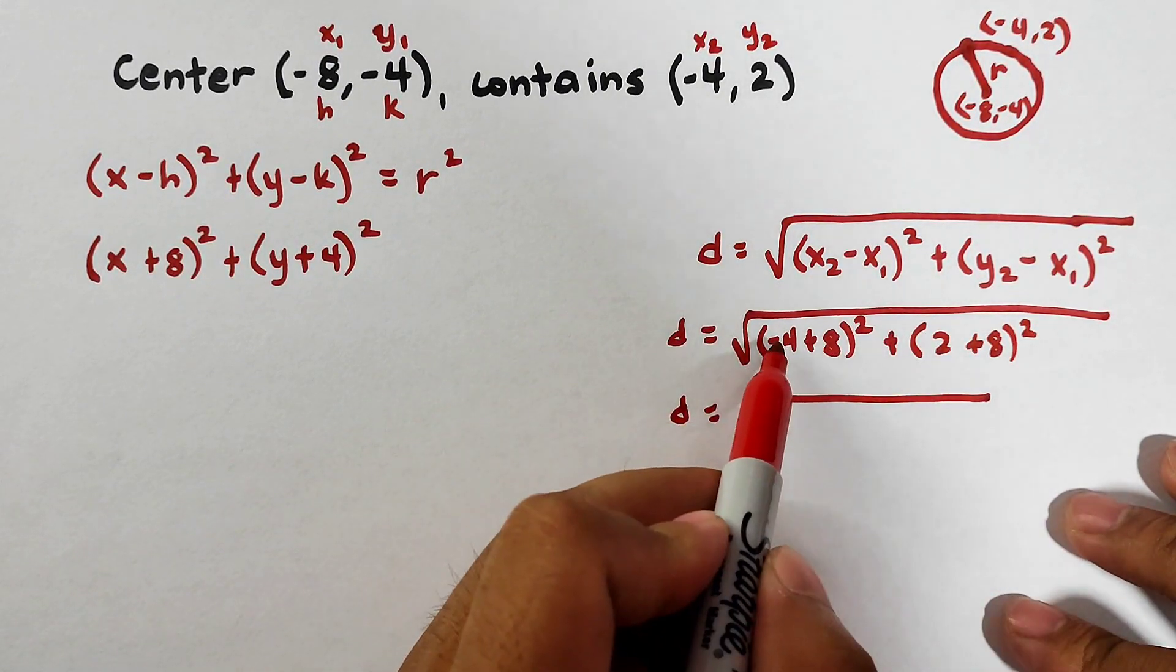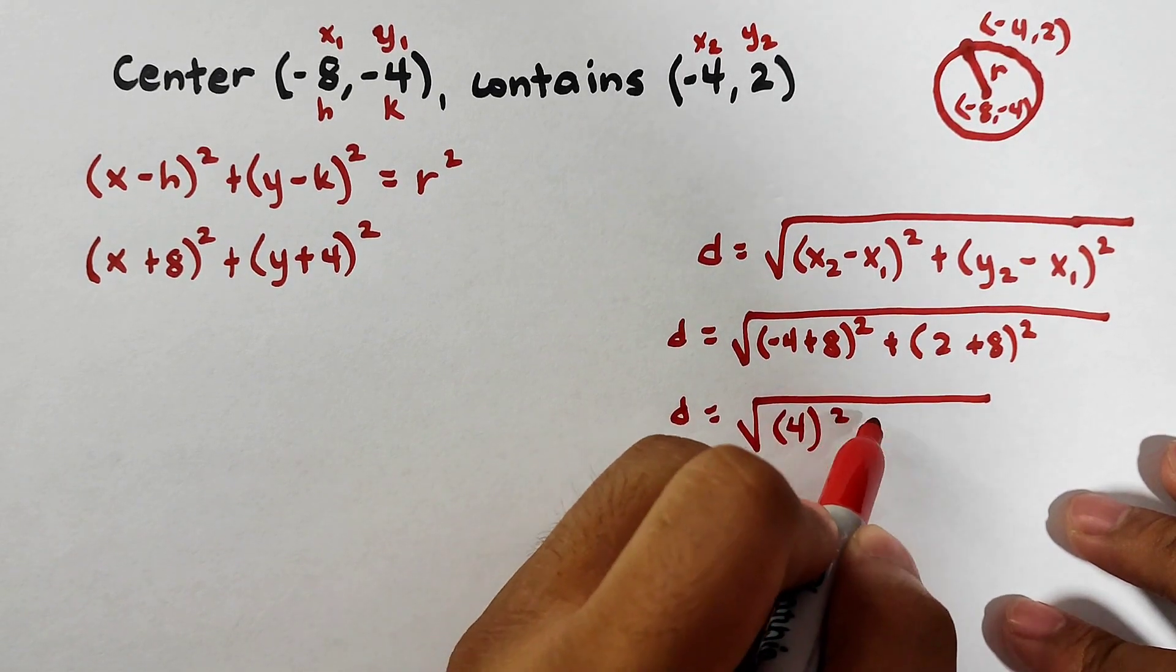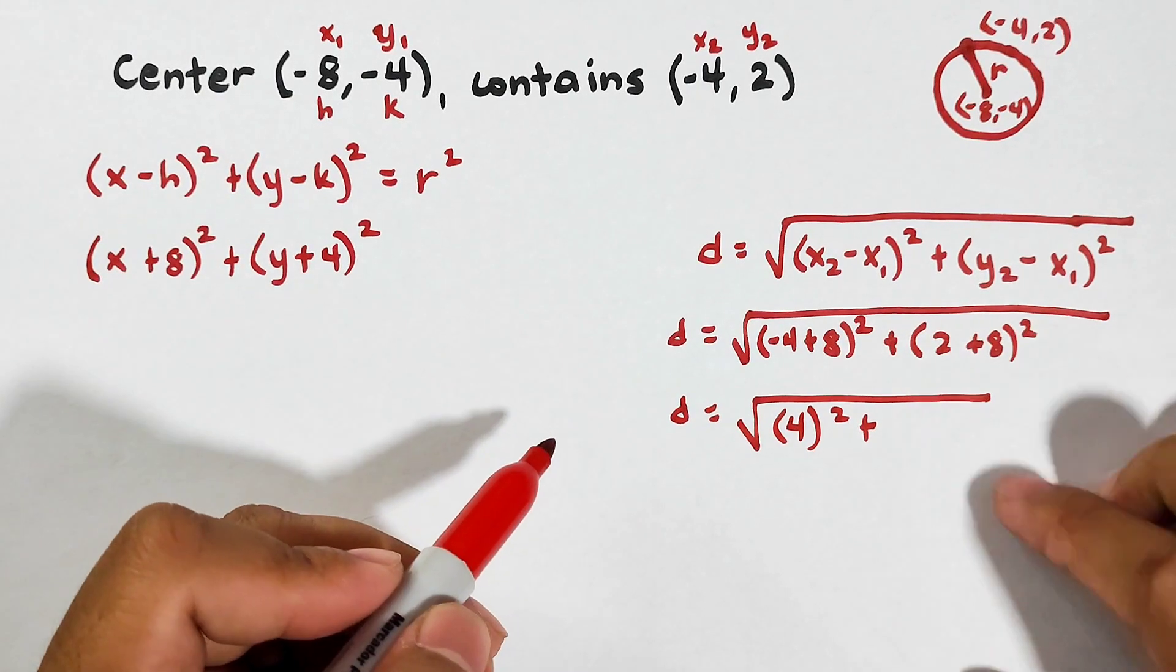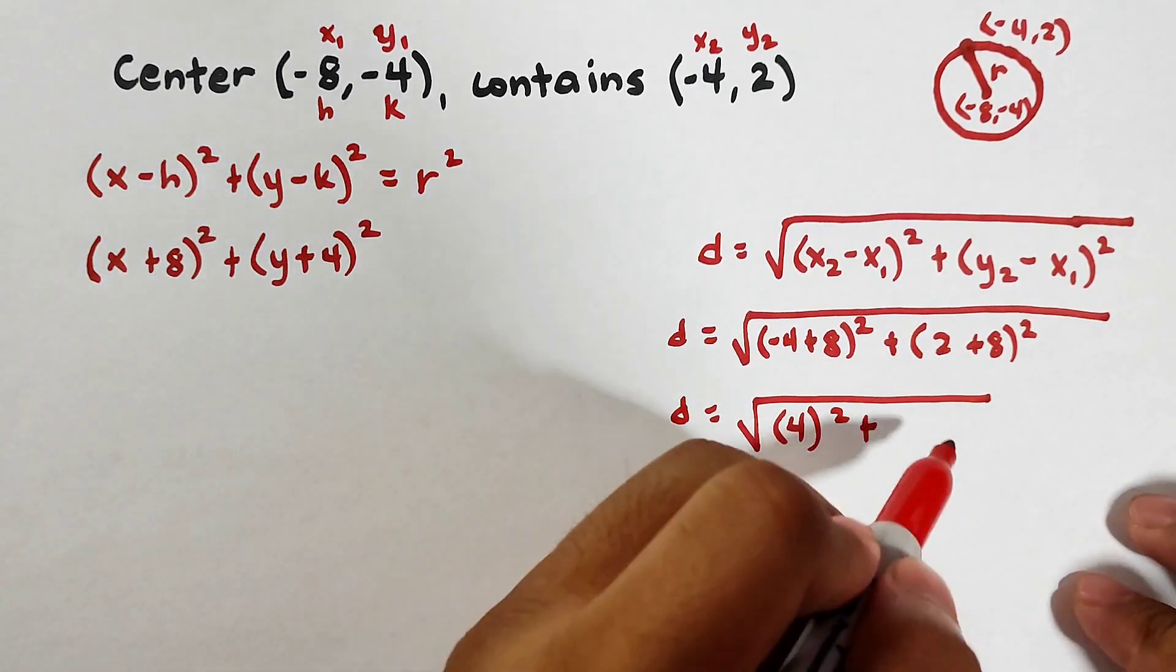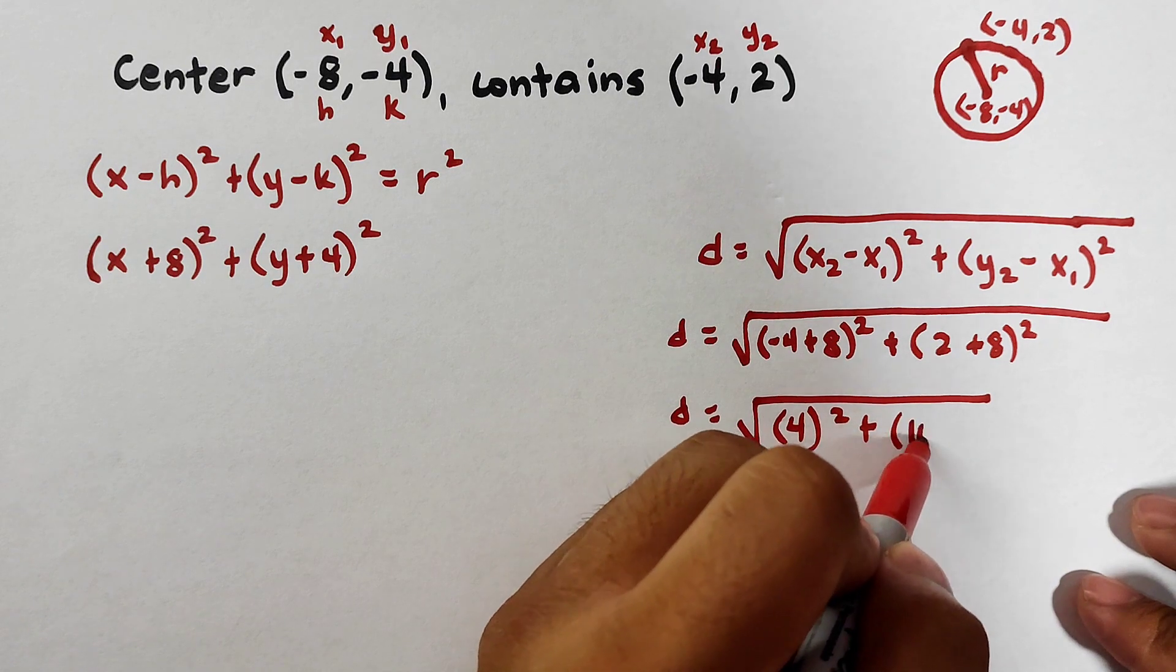Simplify the parentheses, negative 4 plus 8 is 4. Then squared plus, this is how many? This is 10, right? 10 squared.